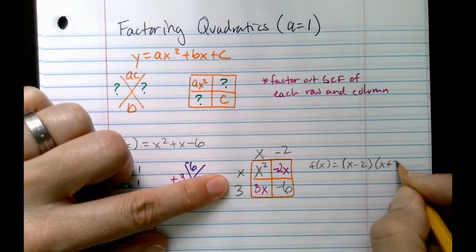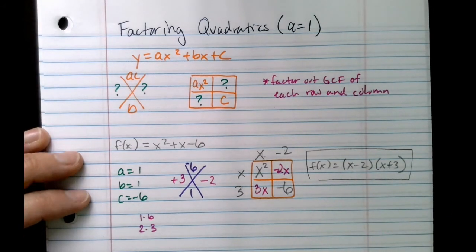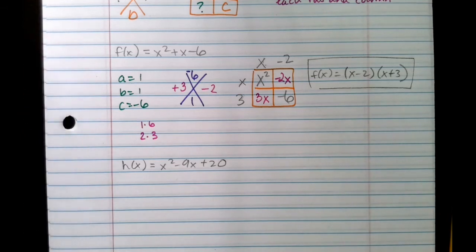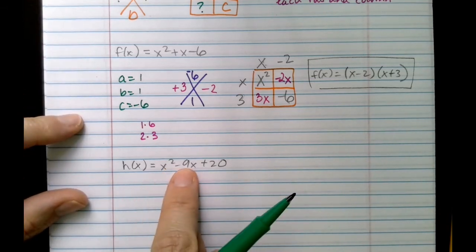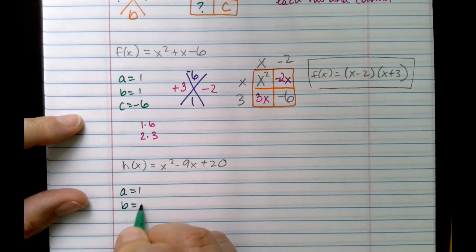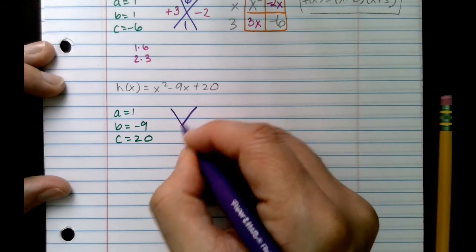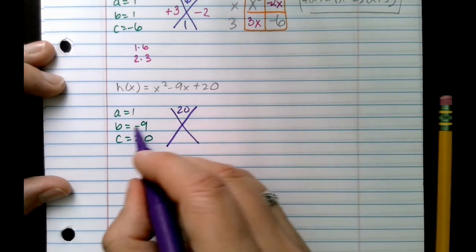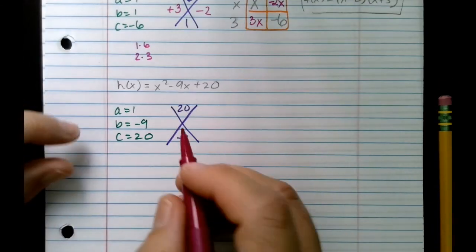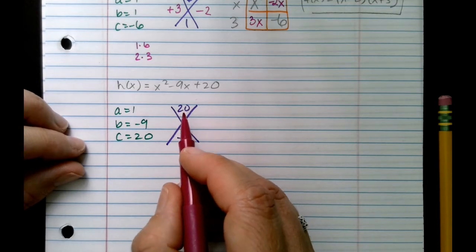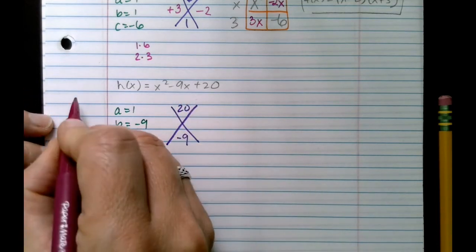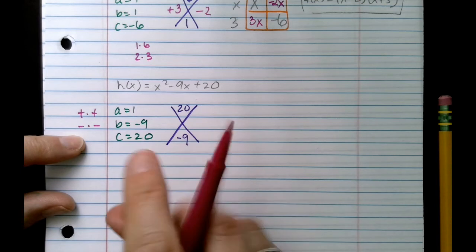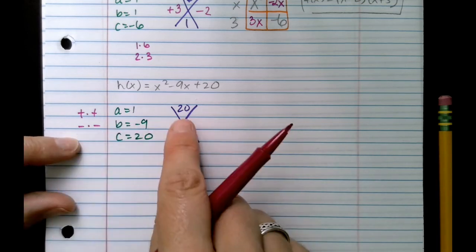My first step again is to identify my ABCs. So a is 1, b is negative 9, c is 20. Next, let's do our factor cross. a times c is 20, so 1 times 20 is 20. The number that's b goes in the bottom here. Now my product is positive, which means when you multiply two numbers, my signs must be the same. So it's either going to be a positive times a positive or a negative times a negative. Now let's look at the bottom number. The bottom number needs to be negative, so that tells me my two numbers here are going to be both negative.